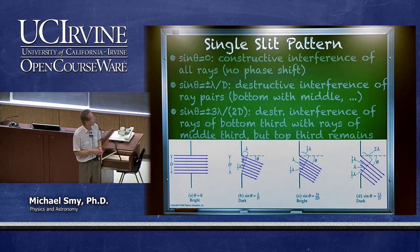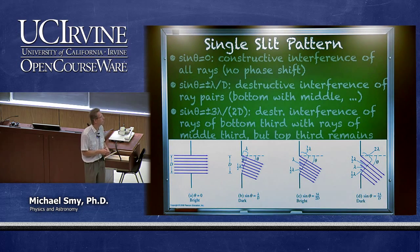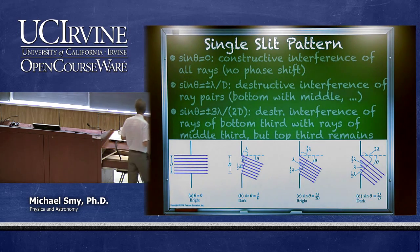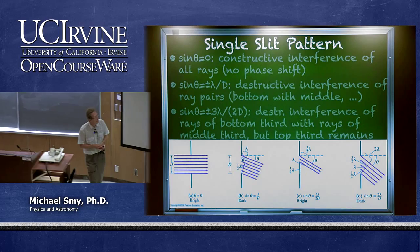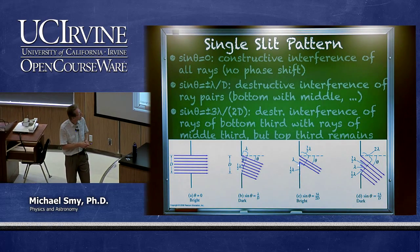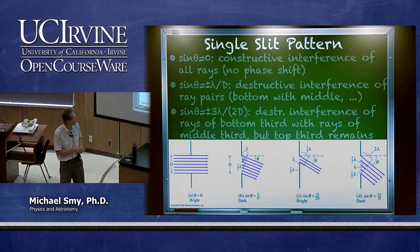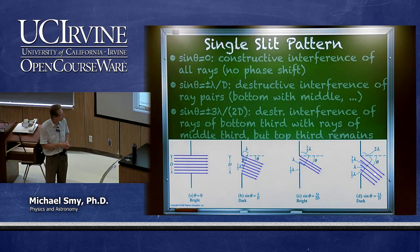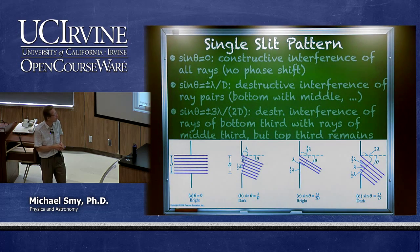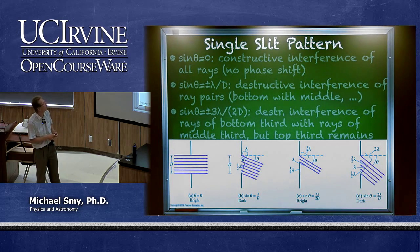If we look at a larger angle still — say the maximum phase shift is three-halves of one wavelength — the same thing happens for the bottom two-thirds of the slit, so we get destructive interference of those rays. It is kind of like making the slit narrower, but the top third survives, and therefore there is some light intensity left, although it is going to be fainter than the maximum for theta equals zero.